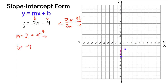So I'm going to keep moving the way the slope tells me: up 2 and to the right 1, again up 2 and to the right 1, and one more time. Now I'm going to line up my straight edge and draw my line. Notice that I am not just connecting the dots — I am extending my line all the way throughout the full extent of the graph. This line is represented by the equation y equals 2x minus 4, because it has a y-intercept of negative 4 and a slope of 2.